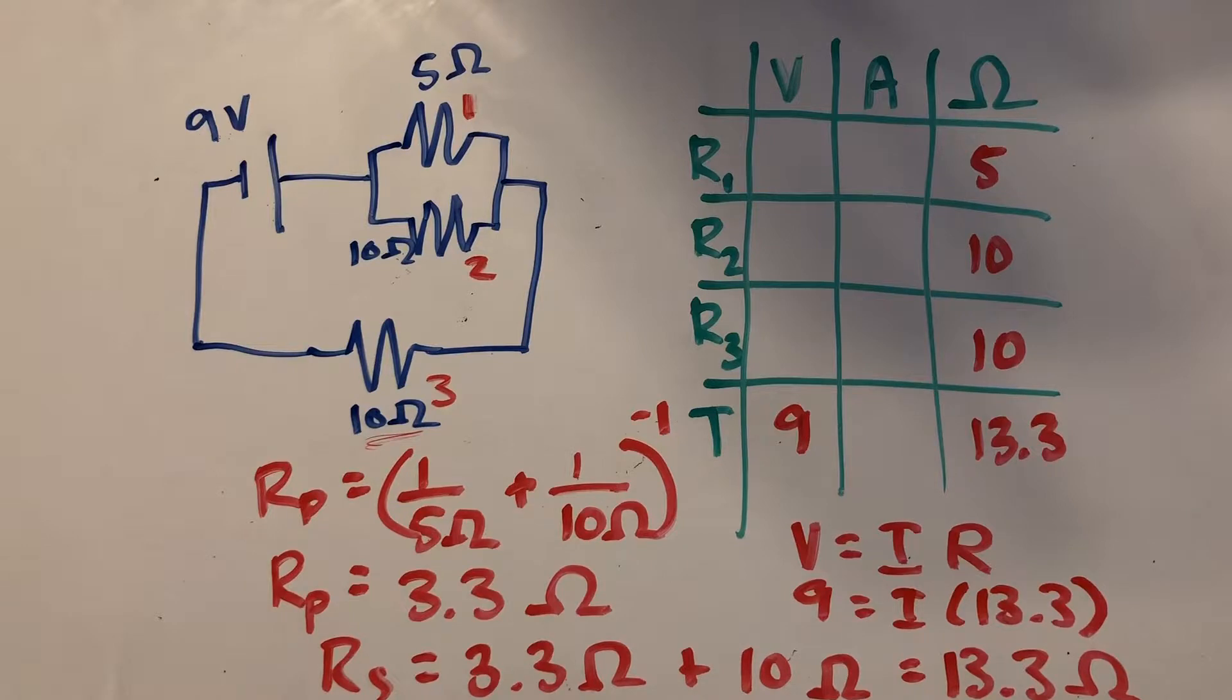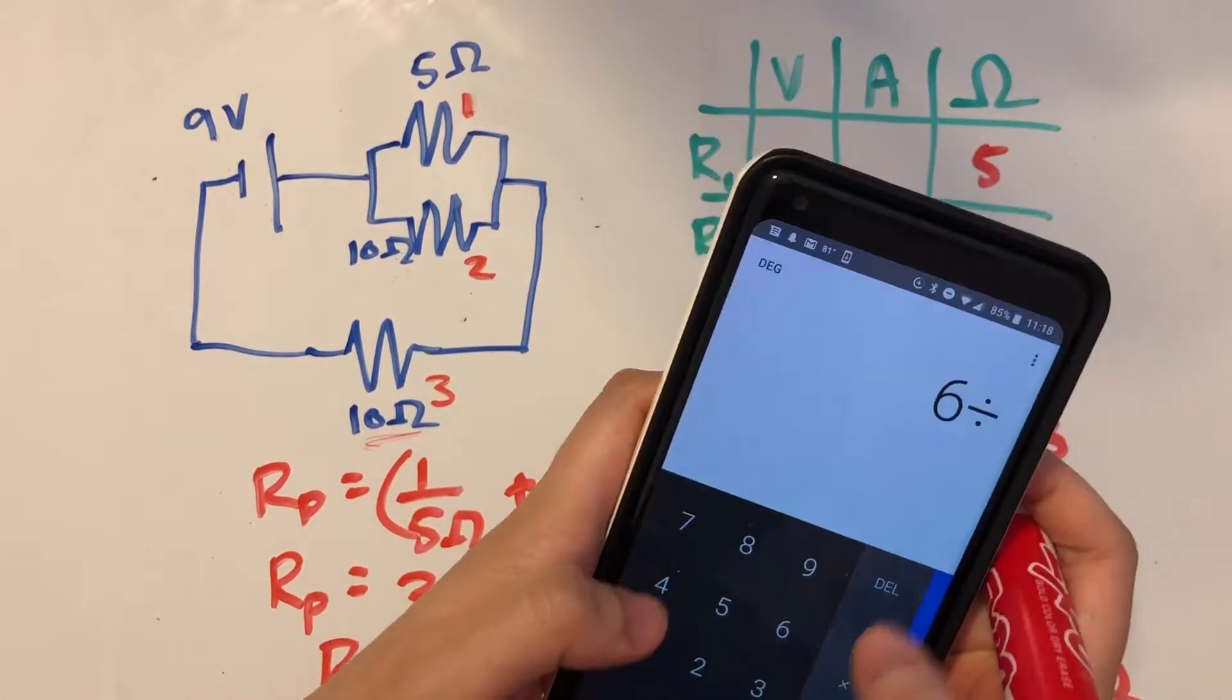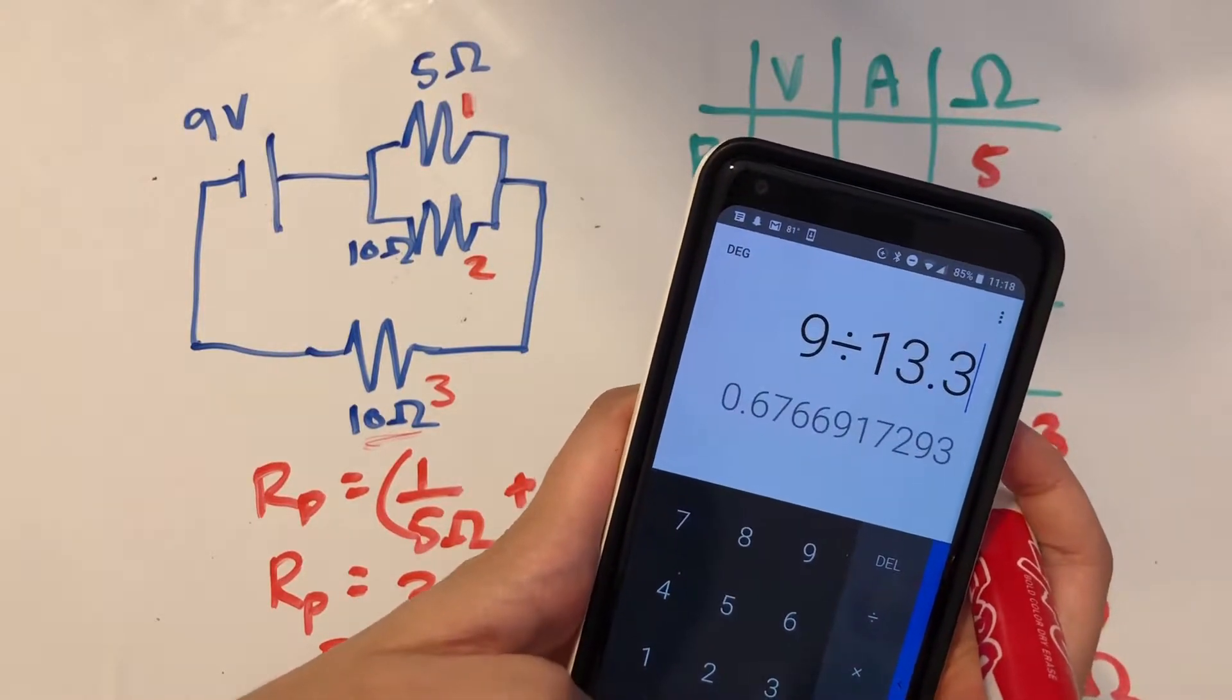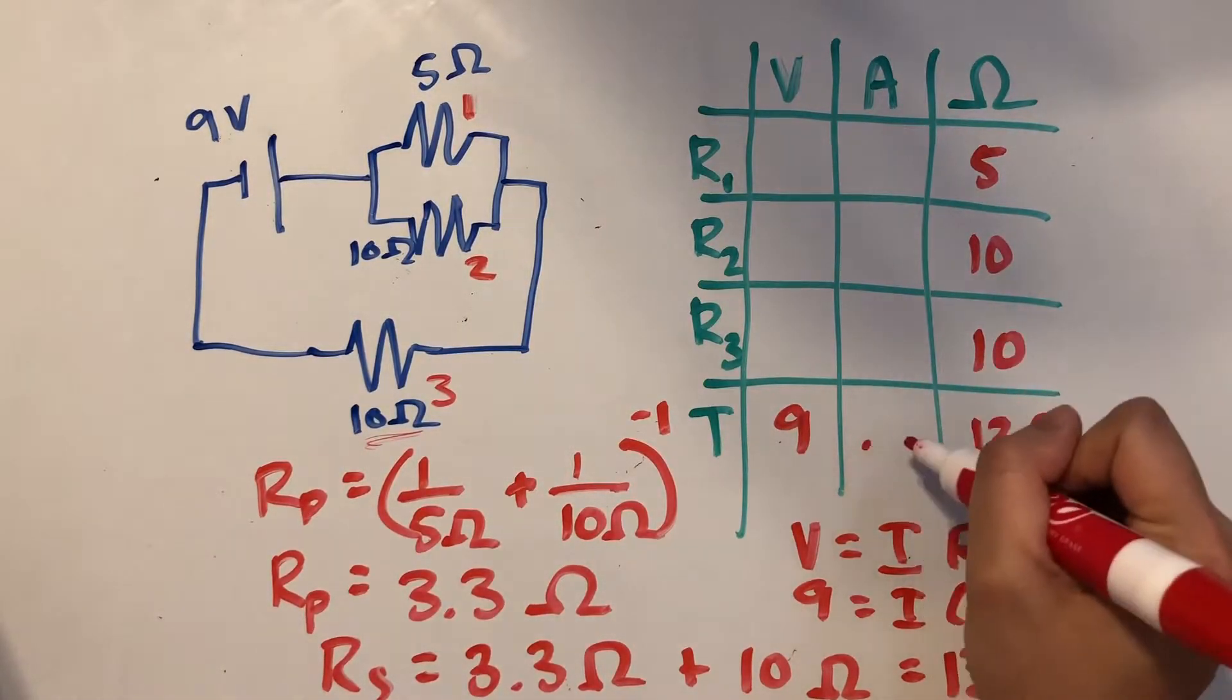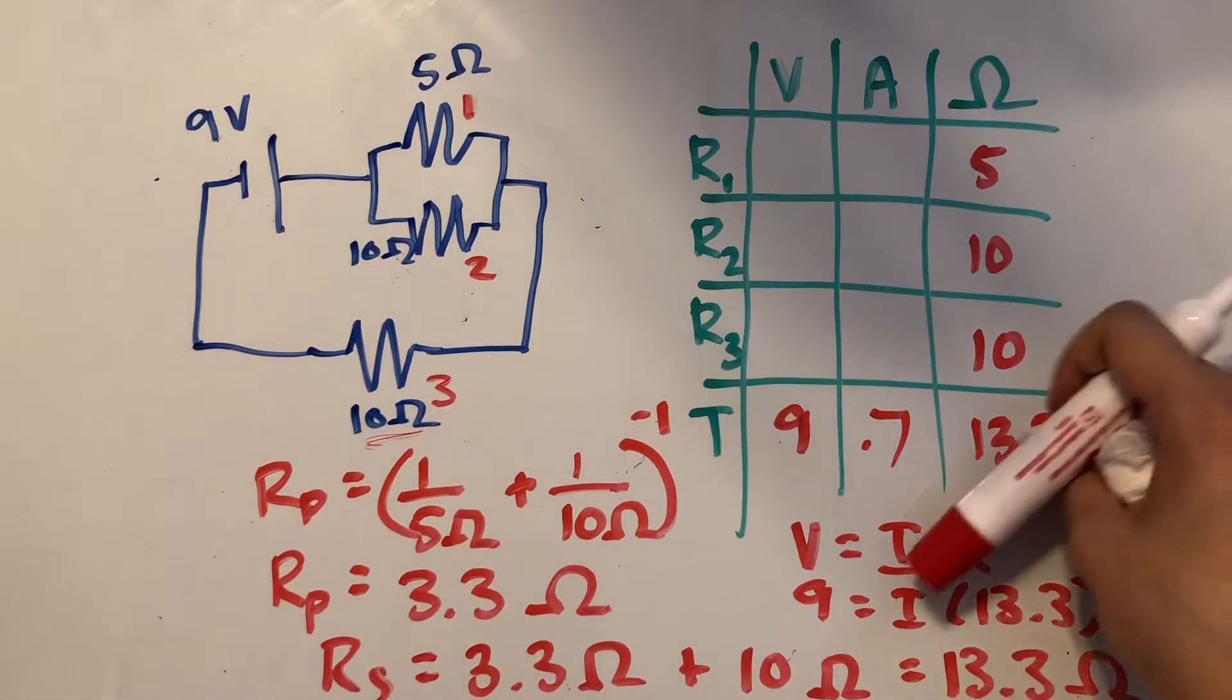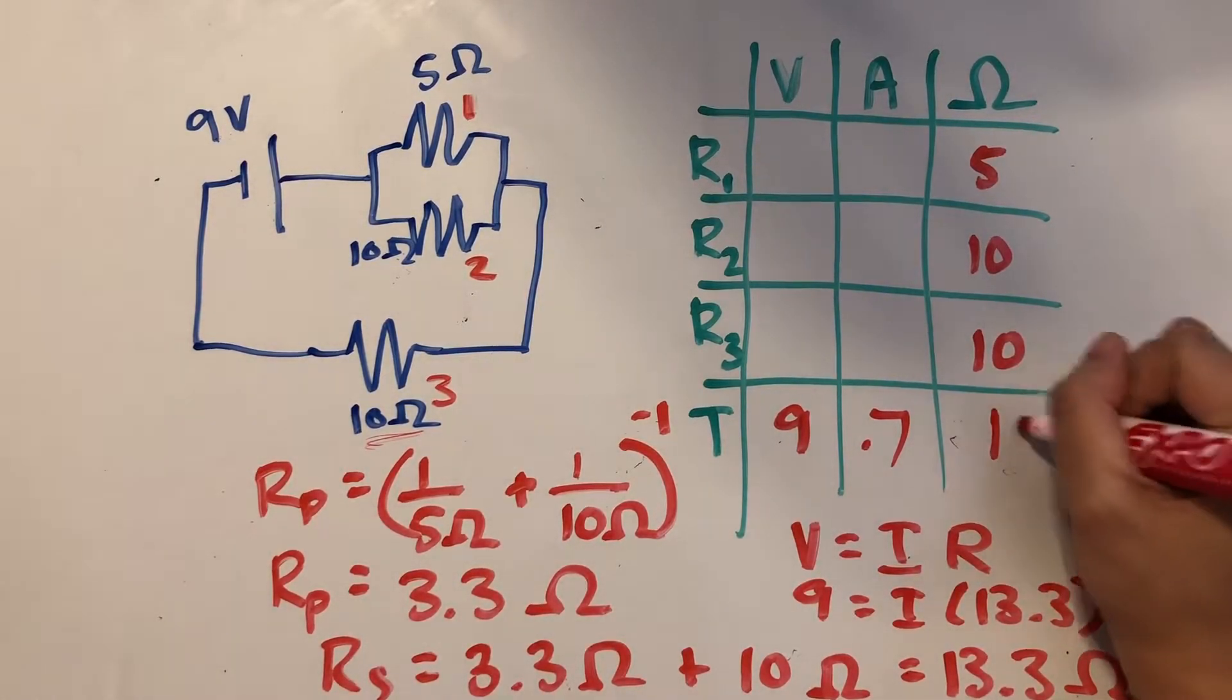So if we simply divide 9 by 13.3, that gives us about 0.677. Let's try to round that to one significant figure, so 0.7. And if we're going to go with one significant figure for all of these values, then we can round this to 10.